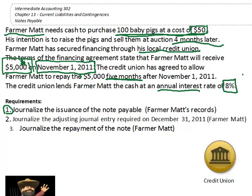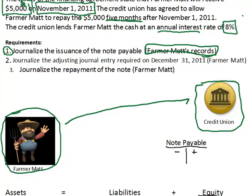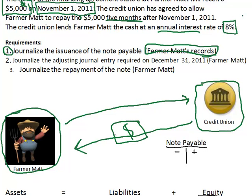Let's look at the first requirement: journalize the issuance of the note payable from the perspective of the farmer. Looking at the diagram, we have Farmer Matt and the credit union. Farmer Matt went to the credit union and asked for money. The credit union said okay, but asked for something in return. Farmer Matt gave his word — his promise — and in return received the money. The bank might also have collateral tied to it, but we'll ignore that here.